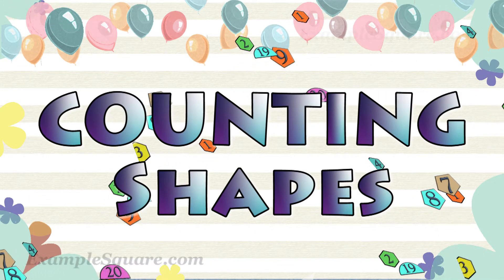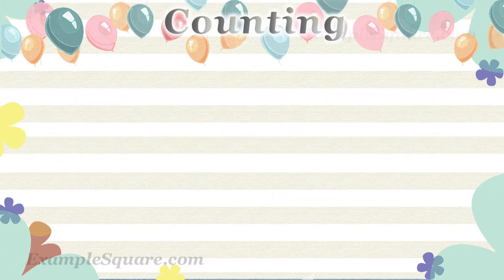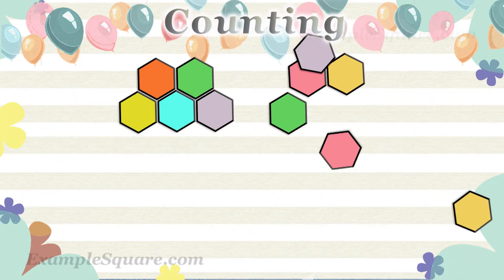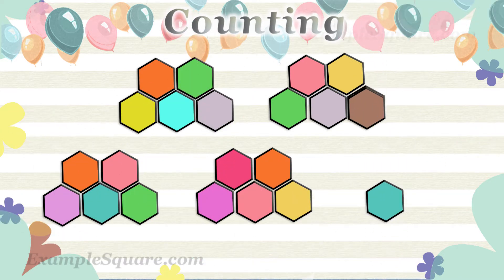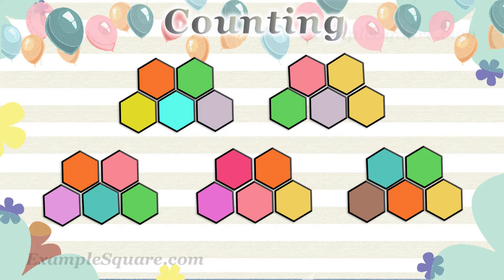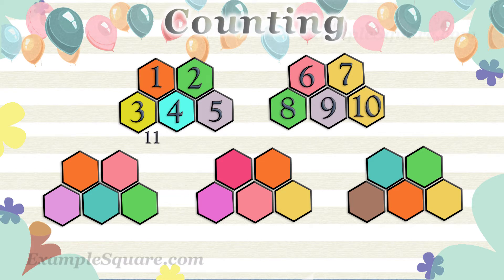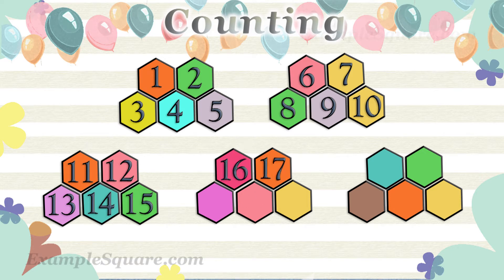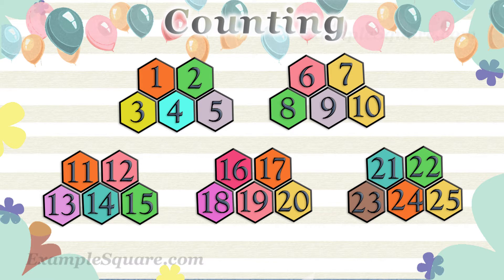Counting shapes. How many hexagon chips are there? One, two, three, four, five, six, seven, eight, nine, ten, eleven, twelve, thirteen, fourteen, fifteen, sixteen, seventeen, eighteen, nineteen, twenty, twenty-one, twenty-two, twenty-three, twenty-four, twenty-five. There are 25 hexagon chips.